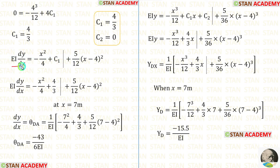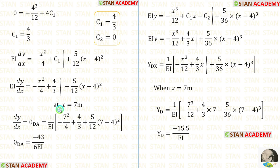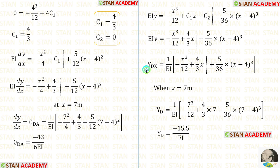In the EI·dy/dx equation, let us apply the value of C1. We know that dy/dx is the slope, and we have to find the slope at point D, that is theta_dA. At point D, the value of x is 4 plus 3 equals 7. So instead of x, let us apply 7. After applying 7, we are getting theta_dA. In the EI·y equation, let us apply the values of C1 and C2 to form the equation for Ydx. We have to find the deflection at point D, where x is 7. After applying, we are getting y_D.